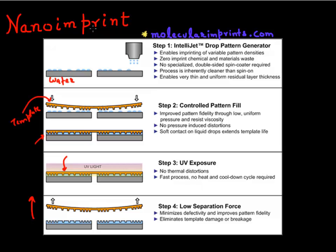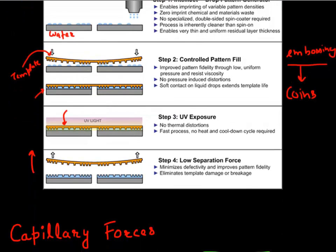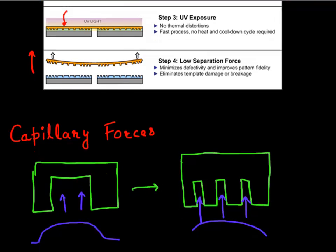I'm taking this image from a company called Molecular Imprint, based in Austin, which started out from UT Austin, developed this technique, and is now trying to commercialize it. You might think — what's new? It looks very much like embossing. People back in the 15th or 16th century used the same technique to print coins. The only thing new is that it works even better when you take it to the nanoscale.